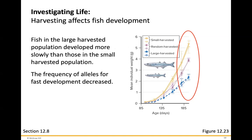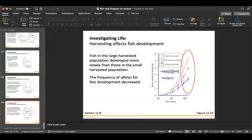Fish in the large-harvested population developed more slowly than those in the small-harvested population, and the frequency of alleles for fast development decreased. Evolution is ultimately going to happen — these are changes that are necessary for ever-changing environments.